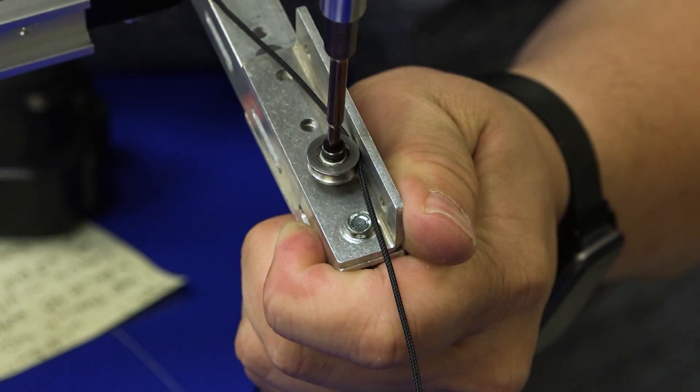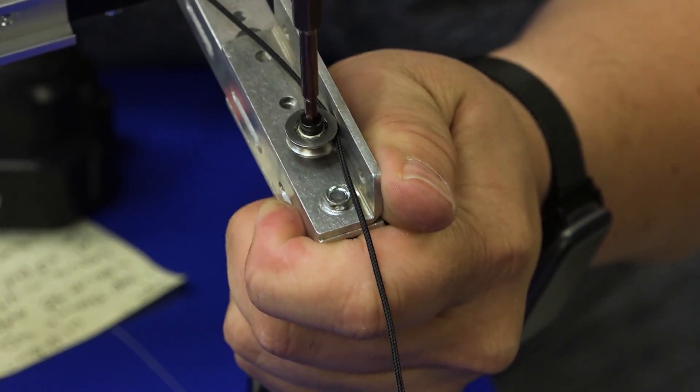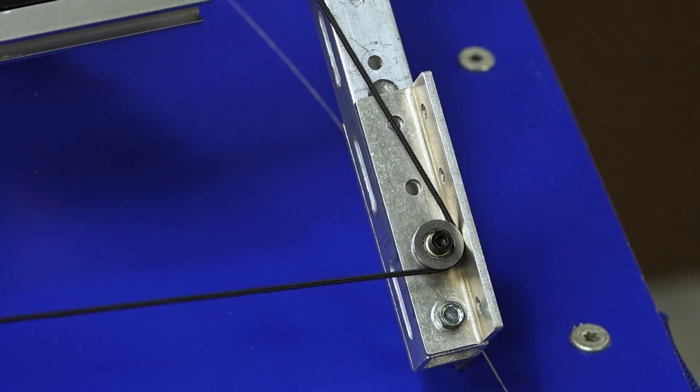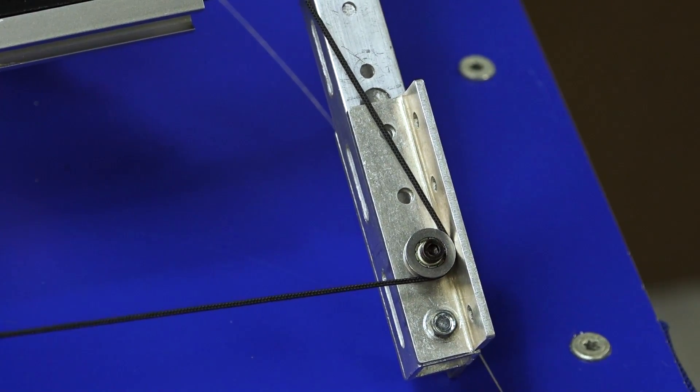And so this idler is going to keep the string from ever coming off. So what I'm going to do is tighten it back up. That bearing will fully retain the string so it shouldn't ever come off.